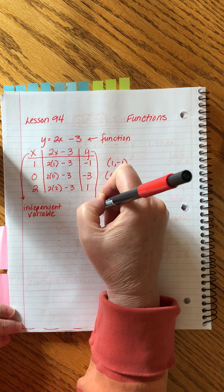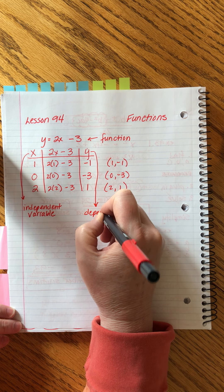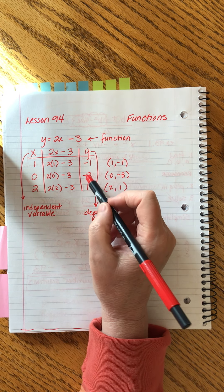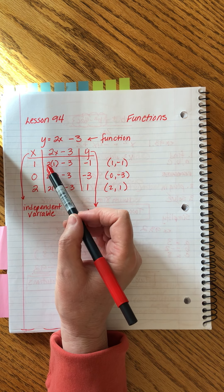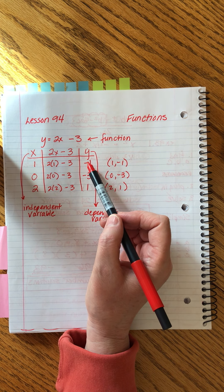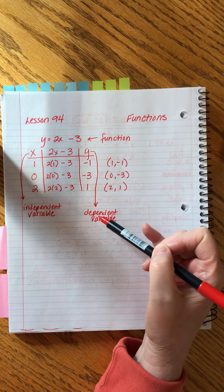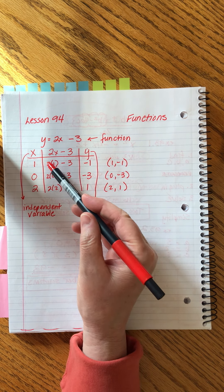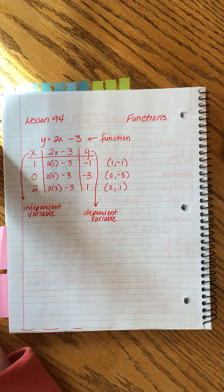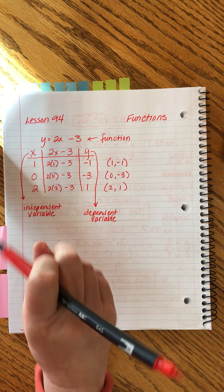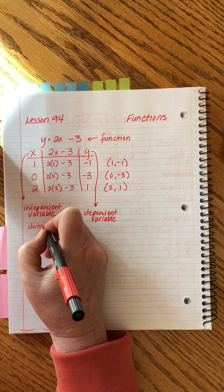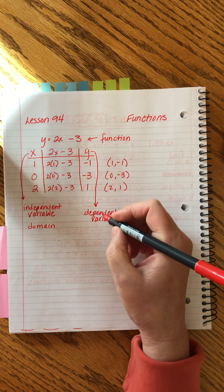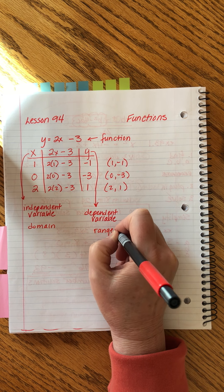This side though is called the dependent variable because we didn't really have any choice in this. Once we chose the x, then we ran it through, and this is the answer that came out. We didn't get to choose that. It had to come out to that number based on the calculation. So, this one was dependent. It depended on this calculation for its value. We were choosing these. So, another thing we call these is the domain. Those are the numbers that we can choose. The ones that come out, the solutions, if you will, we call those the range.